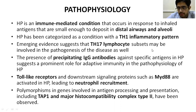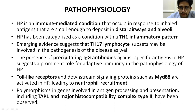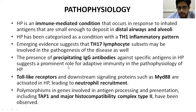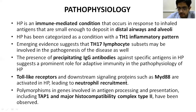Regarding pathophysiology, hypersensitivity pneumonitis is an immune-mediated condition involving the distal airways and alveoli. It is predominantly a TH1 inflammatory pattern, and TH17 lymphocytes may also play a role. The presence of precipitating IgG antibodies against specific antigens suggests a prominent role for adaptive immunity. Toll-like receptors and downstream signaling proteins such as MyD88 are activated in HP, leading to neutrophil recruitment. Polymorphisms in genes including TAP1 and major histocompatibility complex have been observed in the pathophysiology of HP.